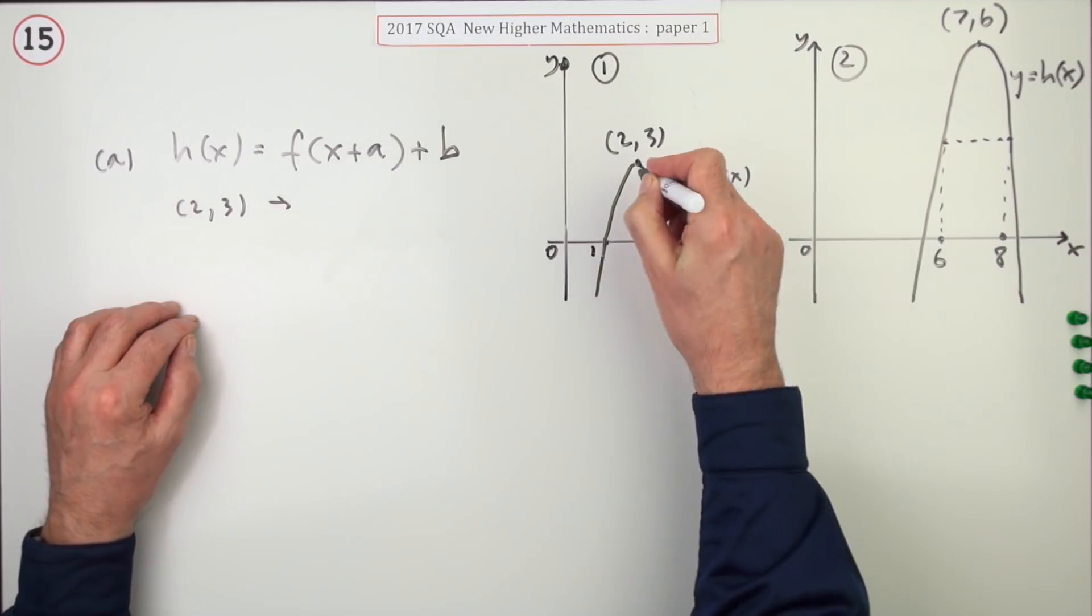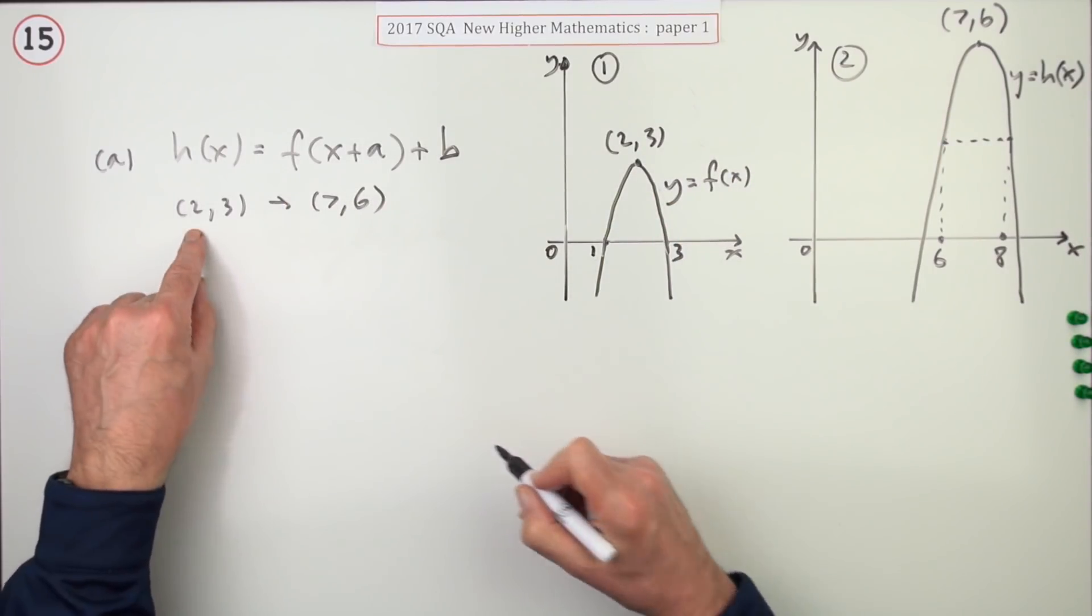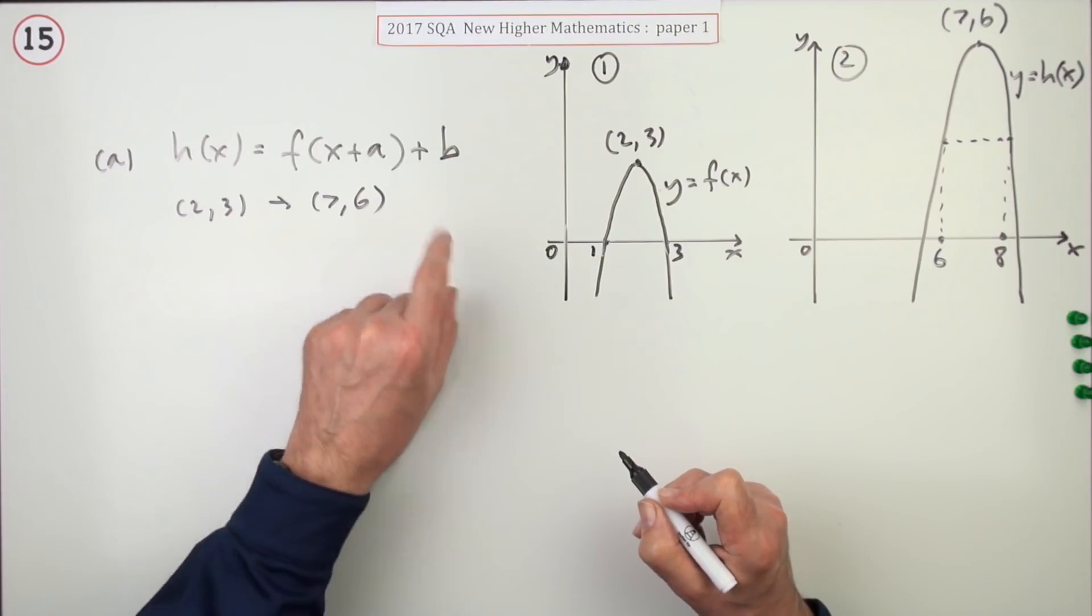That particular point has gone from (2, 3) to (7, 6). In other words, it's gone along 5 and up 3.